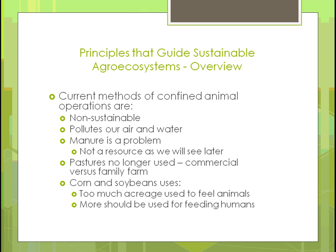Corn and soybeans are the two predominantly major crops, and we're using too much acreage to feed the animals we're growing. We should be using more of those crops to feed humans. If we used the sustainable methods of the past — with animals out in the pasture — we would be using less corn and soybean to feed them.